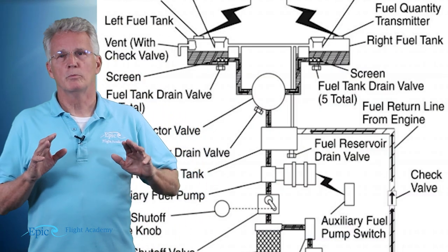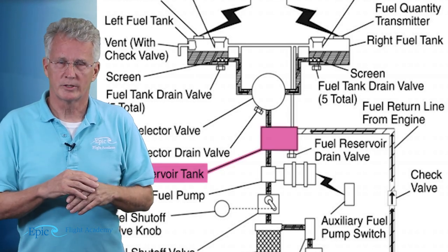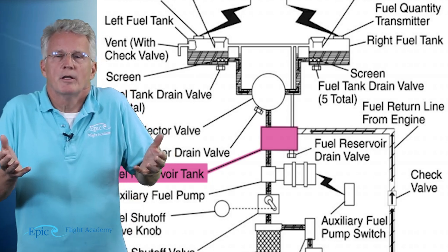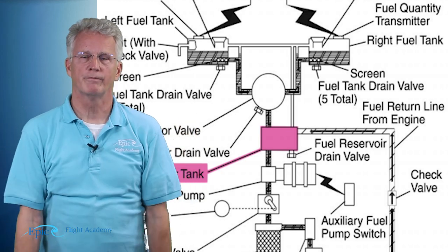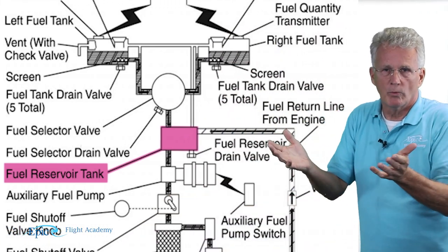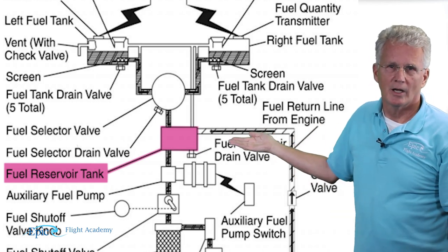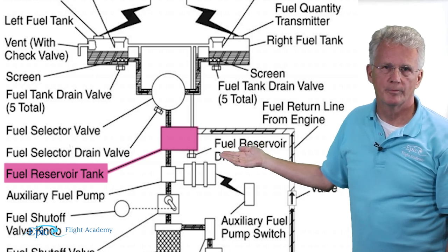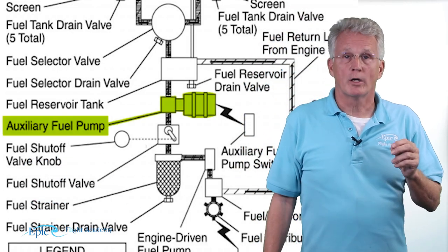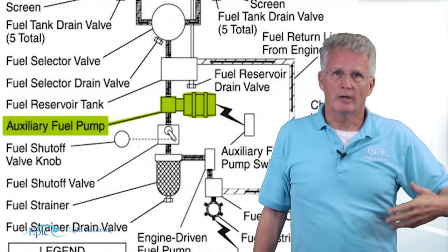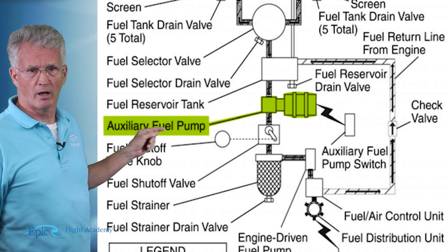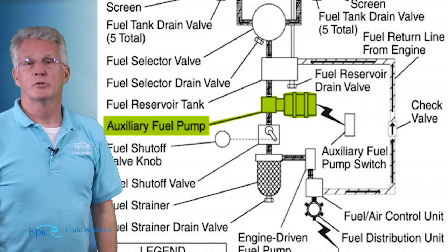From the fuel selector the fuel moves forward to what we call a reservoir tank. This reservoir holds a couple of gallons and serves the purpose of stabilizing the fuel flow from the tanks into the engine. It takes fuel from both of the wing tanks and has a stabilized quantity to feed the engine. The next item in the schematic is an auxiliary fuel pump — auxiliary meaning additional, secondary, a backup. This fuel pump is driven electrically, as shown by the lightning bolt symbol, and you have a switch on your panel to turn it on and off.